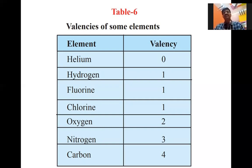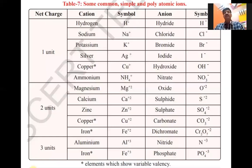Hydrogen — valence is 1, it gains one electron. Fluorine — valence is 1, it gains one electron. Oxygen — valence is 2, it takes two electrons. Nitrogen — three electrons, so valence is 3. Carbon — shares four electrons, so valence is 4. The capacity of sharing, losing, or gaining electrons — that number is known as the valence of the given element. If it is gaining, that is negative charge — anion, symbol minus. If it is losing, that is positive charge — cation, symbol plus. Here the table is given in our textbook.